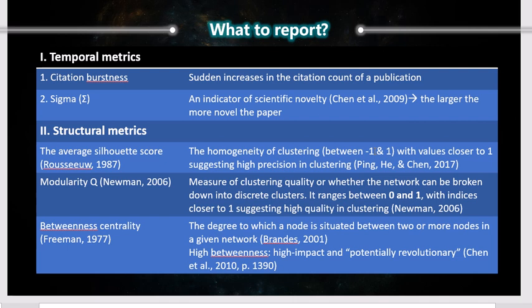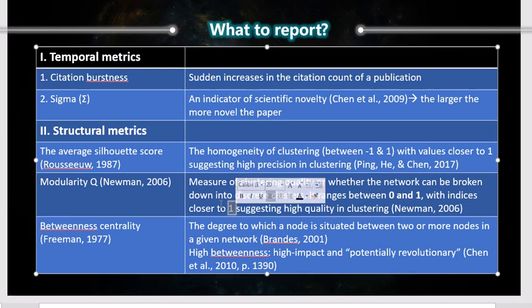Modularity Q is a measure of clustering quality — whether the network can be broken down into discrete clusters. It ranges between zero and one, with indices closer to one suggesting higher quality clustering. The higher and closer to one, the better, and the more confidence we have in the clustering accuracy or precision.